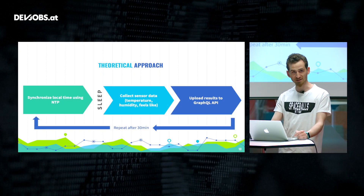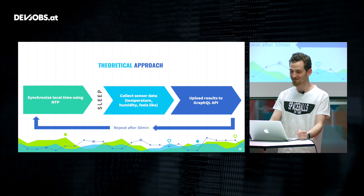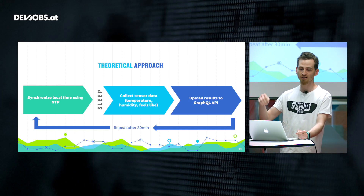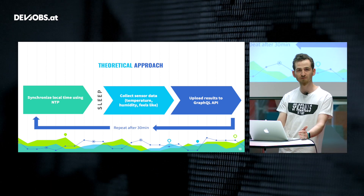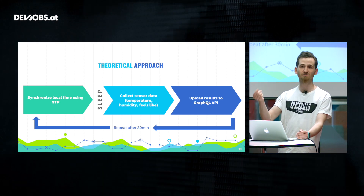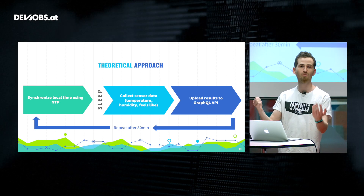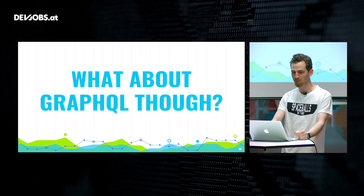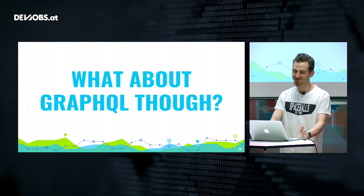Going back to the theoretical approach and the flow chart, it's basically the perfect tailor-made flow for the loop function. Since it's single-threaded, I call the NTP sync, wait for a set amount of time, collect the sensor data, upload the results to the GraphQL API, and then wait another 30 minutes. That's essentially everything the weather station does all day and all night as long as it's running.